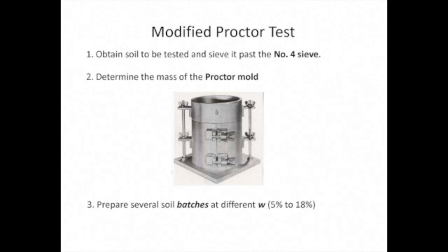To perform the modified Proctor test, we do the following. We first obtain approximately 40 pounds of soil that passes the number 4 sieve — that is, all the particles in the soil must be smaller than 4.76 millimeters. We then determine the mass of the Proctor steel mold; the mold's volume is one-thirtieth of a cubic foot.